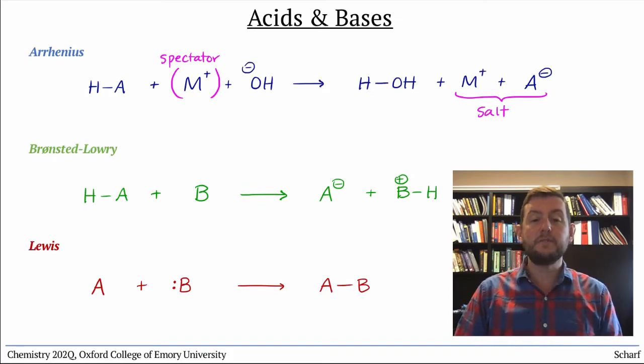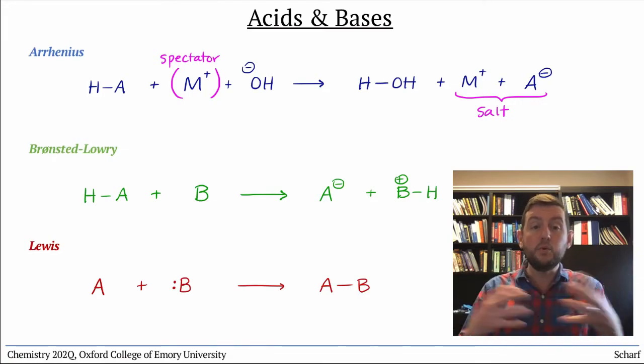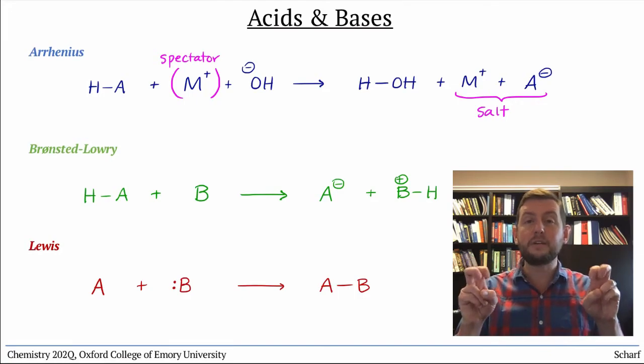To give us a bit more information about how these reactions take place, that is, precisely how the electrons move, we can illustrate the bond-making and bond-breaking using a convention called the curved arrow formalism.